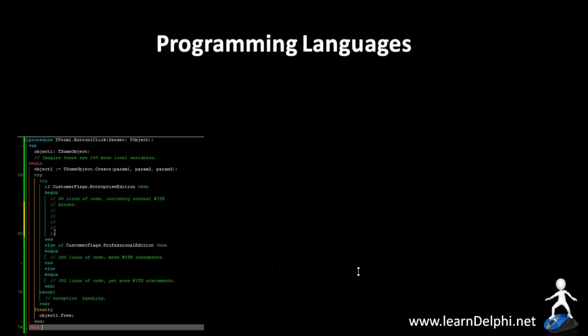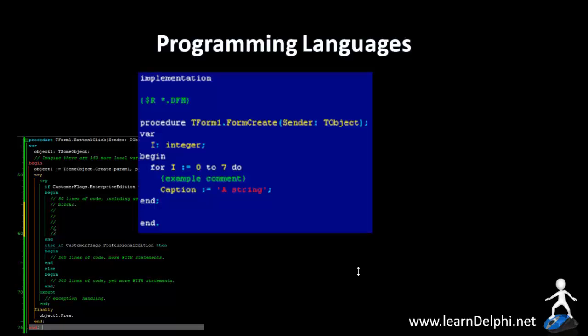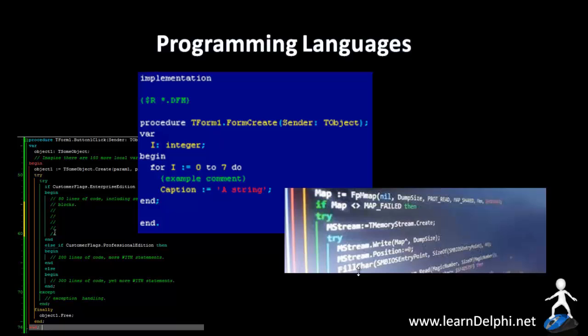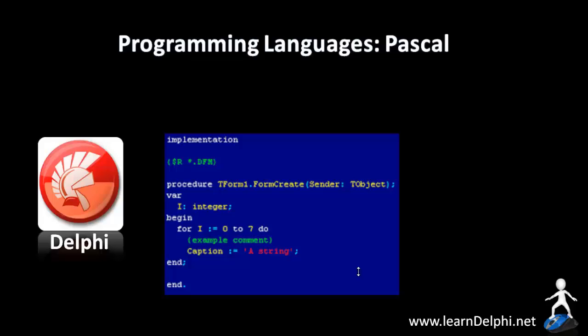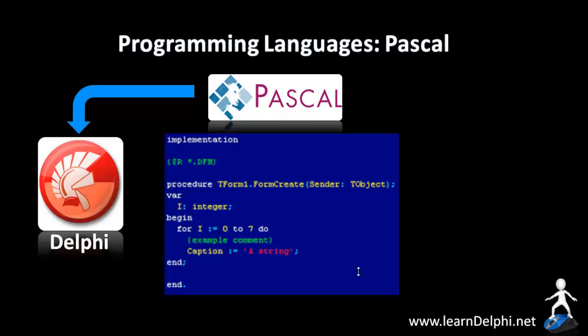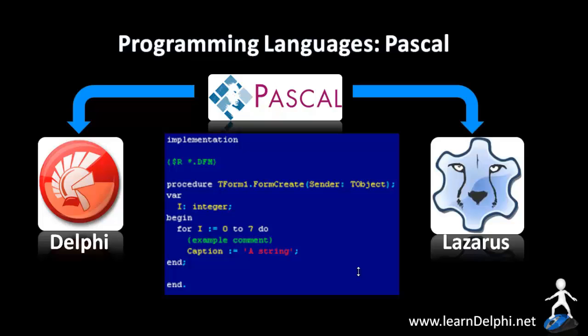We call these instructions code, but although the word may give the impression that programming is cryptic and mysterious, it is actually not so scary, and it is not so difficult to learn. Delphi, for example, uses plain simple English words, and that is why it is one of the most popular programming languages to learn programming. Delphi actually derives from another programming language called Pascal. There are other programming environments that also use the Pascal programming language, one of these is a tool called Lazarus. You can apply everything that you learn in these courses also in Lazarus.